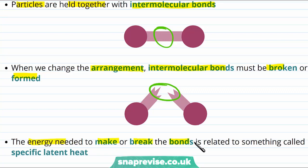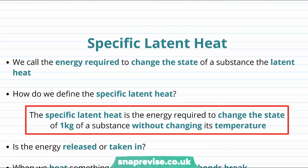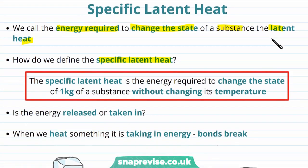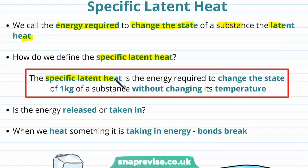And the energy needed to make or break the bonds is related to something we call the specific latent heat. Because this is about the energy for breaking and making bonds, it's also about the energy for changing state. So what is the specific latent heat? We call the energy required to change the state of a substance the latent heat. The specific latent heat is the energy required to change the state of one kilogram of a substance without changing its temperature.